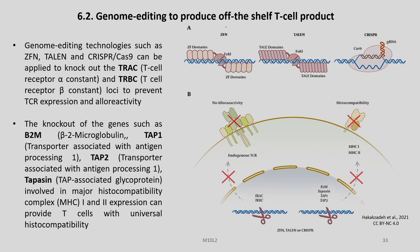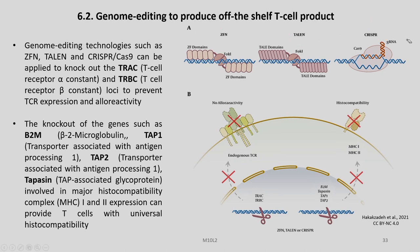We can use various platform technologies such as ZFN, TALEN, and CRISPR-Cas9 for production of off-the-shelf T-cell products. Genome editing technologies of various kinds can be applied to knock out the T-cell receptor alpha constant and T-cell receptor beta constant loci to prevent T-cell allo-reactivity.